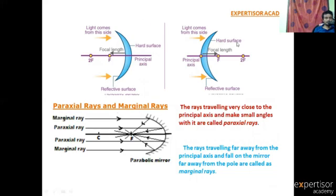Let's verify the two different mirrors — concave mirror and convex mirror. Here, this is the focal length, this is the principal axis, this is the non-reflecting surface, and this is the reflecting surface. This is the direction of incident light rays. For the convex mirror, this is the principal axis, this is the focus, and this is the non-reflecting surface. The distance between pole and focus is the focal length.